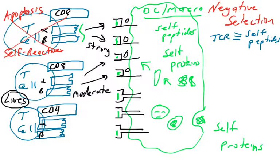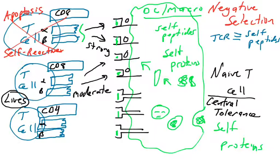So that T cell now becomes a naive T cell. And this is a CD8 naive T cell. So it's let out into the world. And if it activates, it'll become a cytotoxic T cell. So this is where T cells are gaining central tolerance. They are tolerant of molecules found in the thymus, which is a central lymphoid organ.